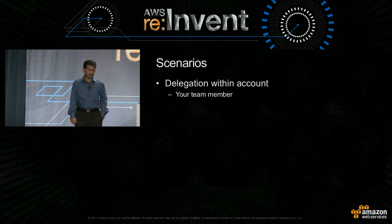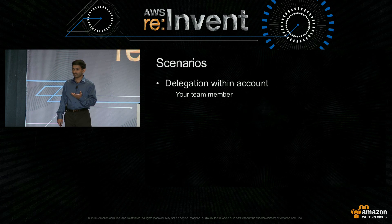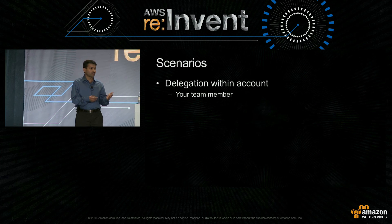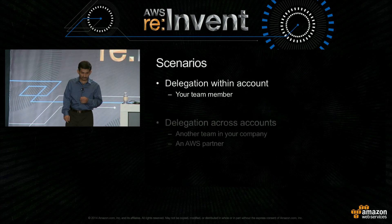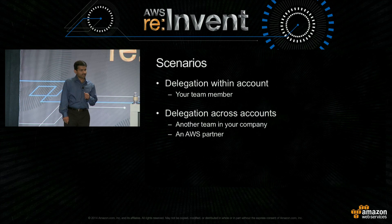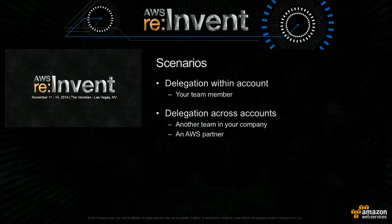Let's look at scenarios. We'll look at three scenarios. The first one is the most basic form of delegation: you own an AWS account and you want to delegate access to someone on your own team. The next one is delegating across account, and this can be an account that is within your company, or it can be outside your company.